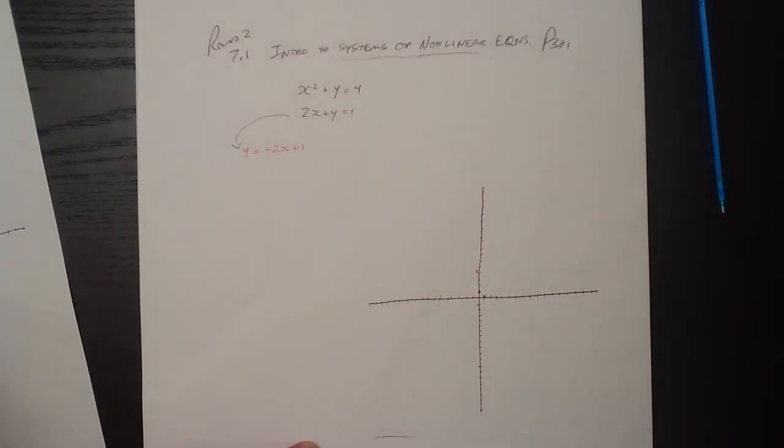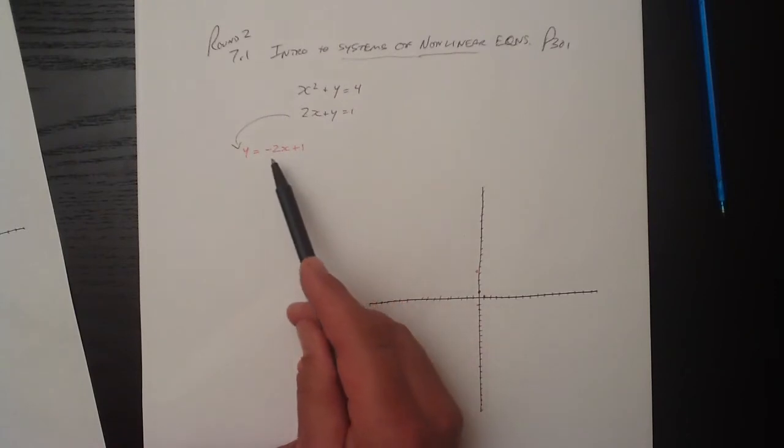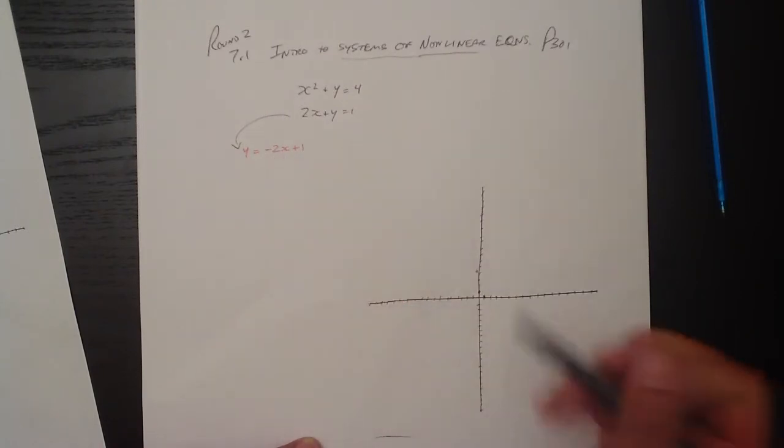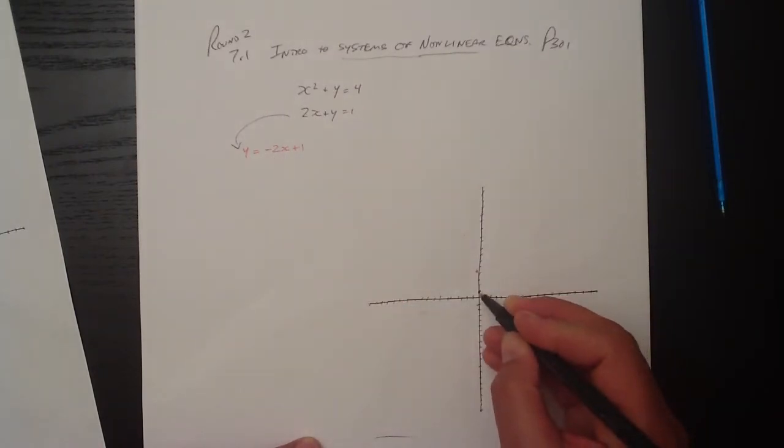We know that the y-intercept is plus 1. And we know that the slope is negative 2. So if the rise over run, so we rise negative 2 and run by 1, rise by negative 2, run by 1, rise by negative 2, run by 1.